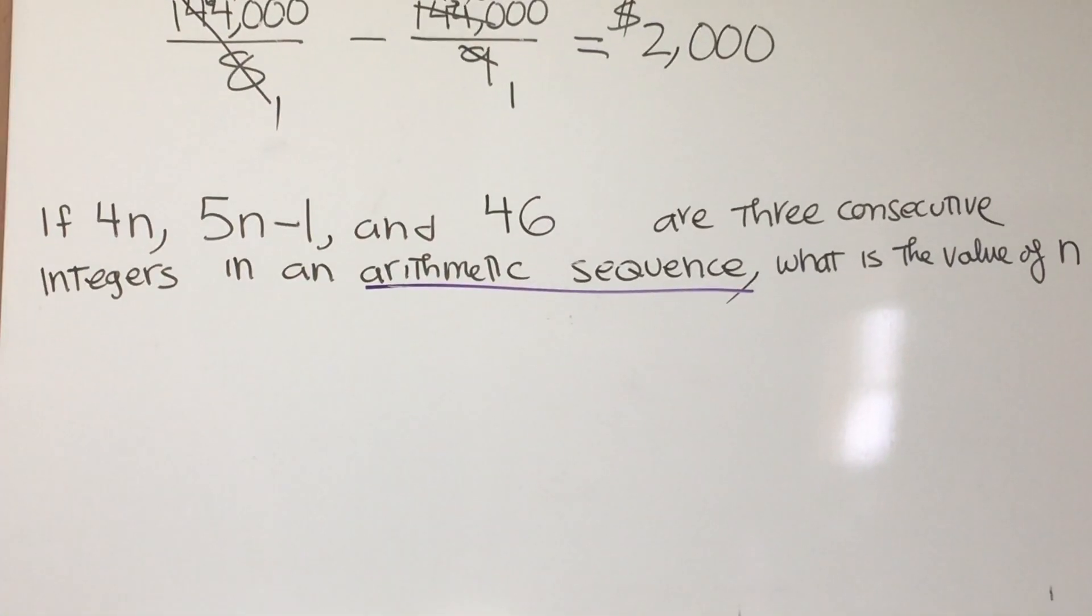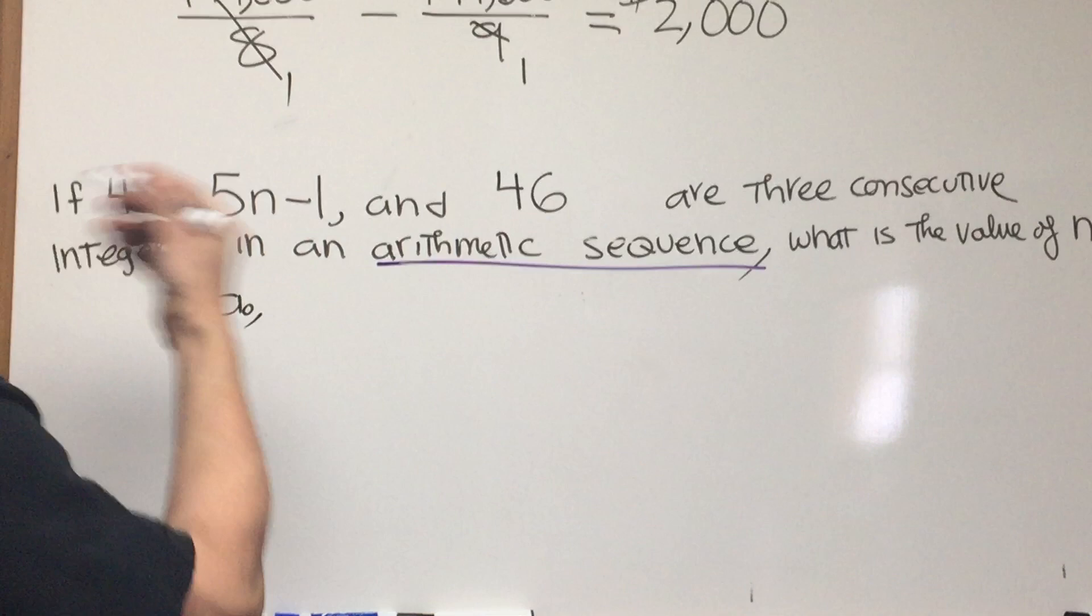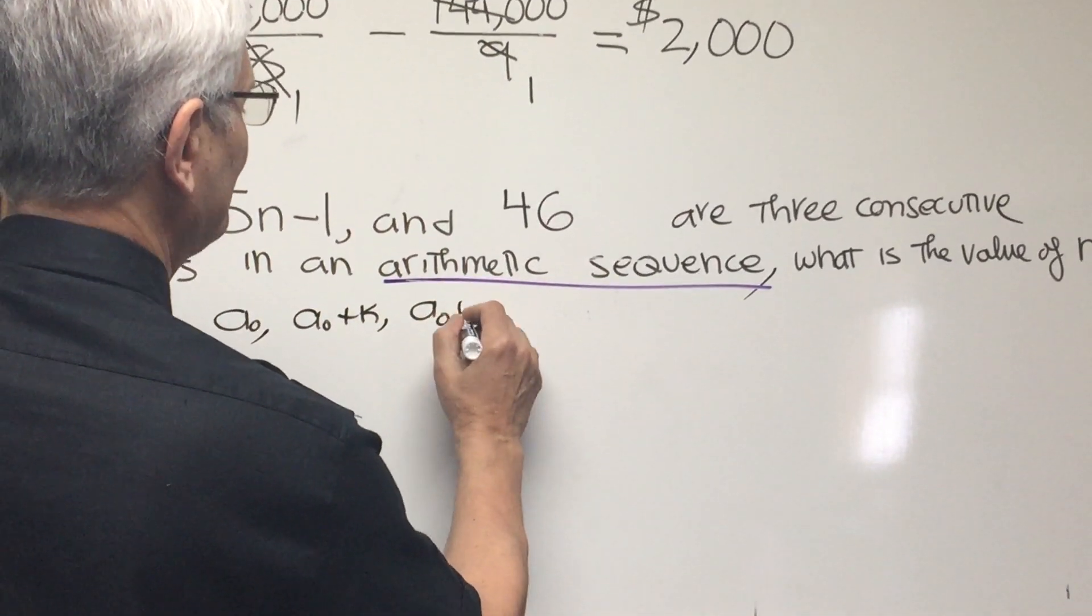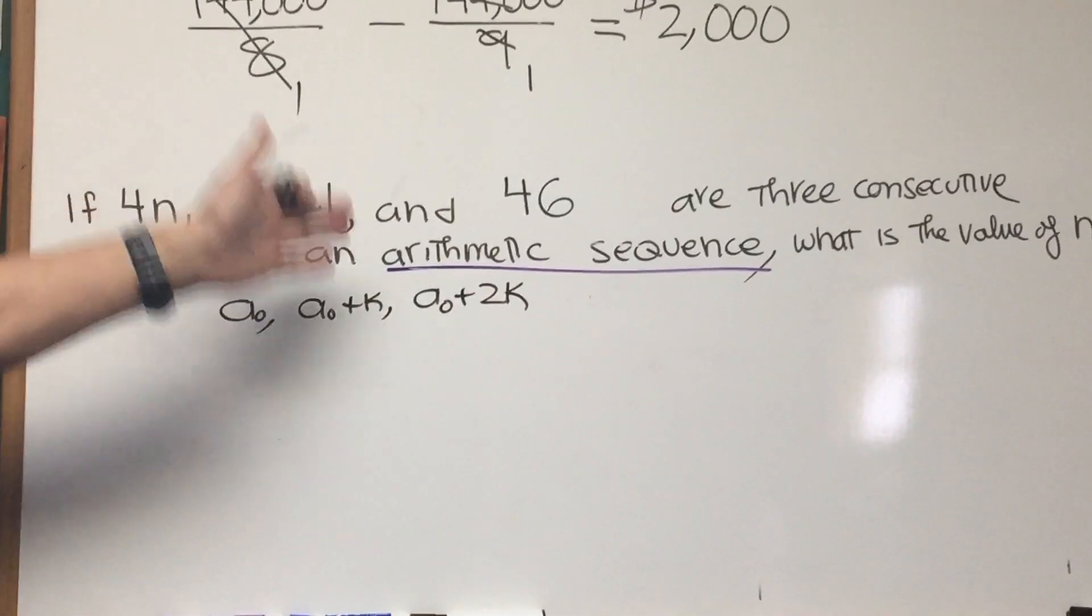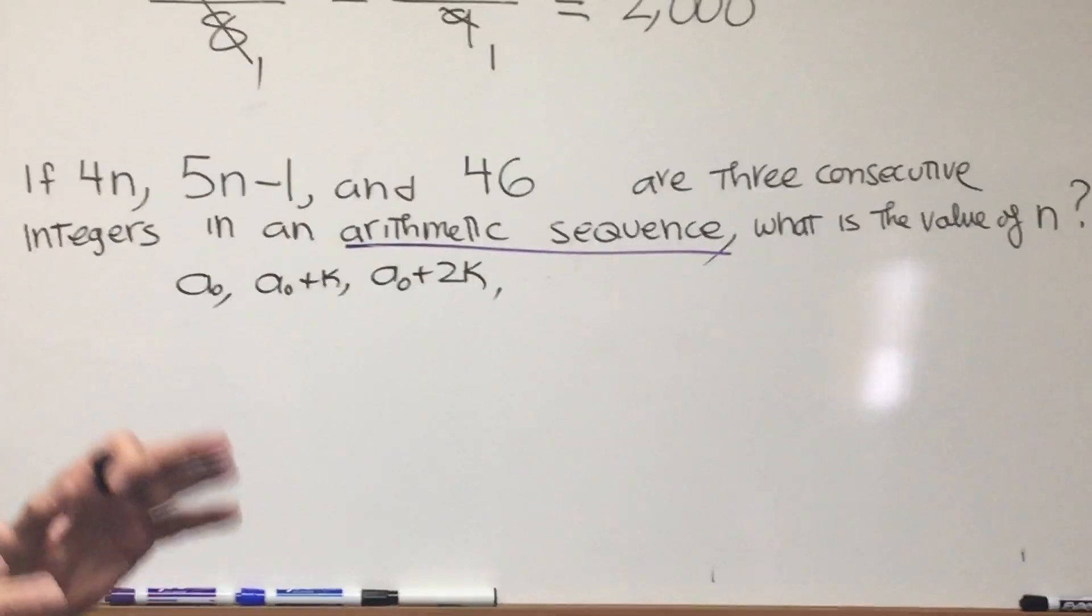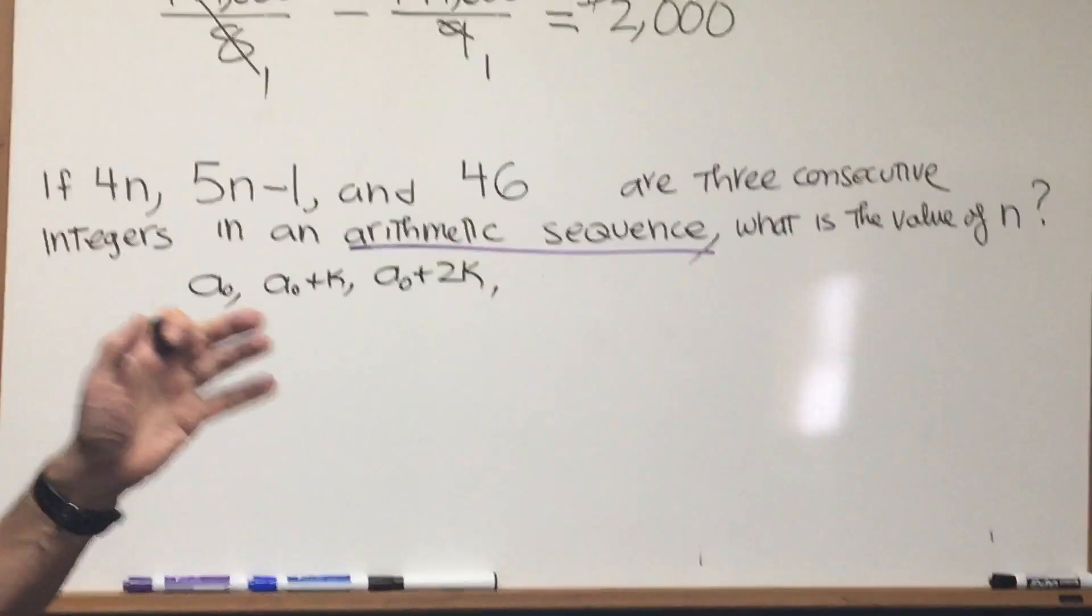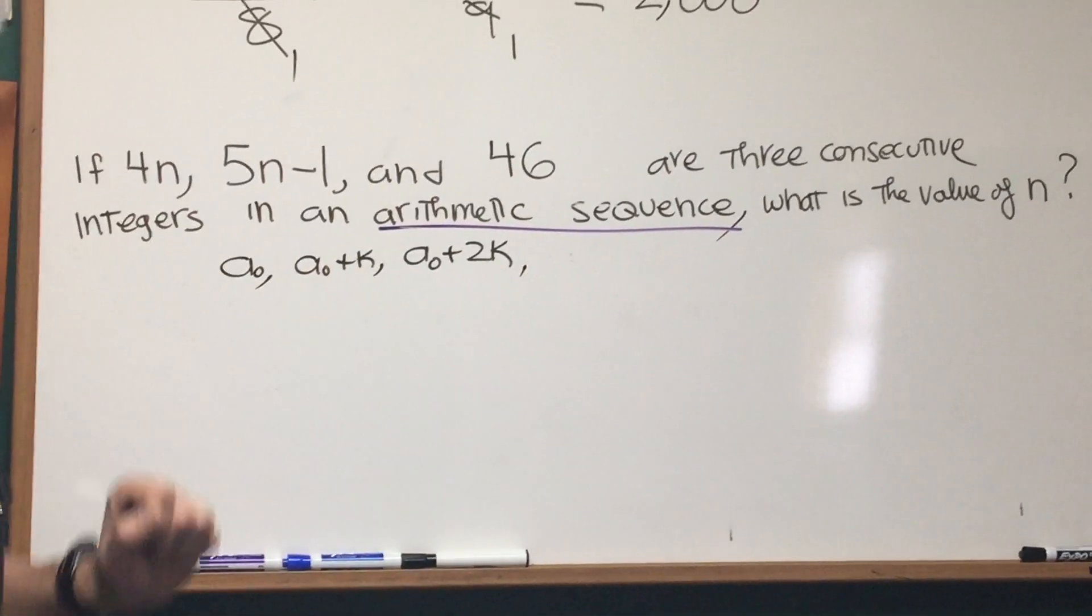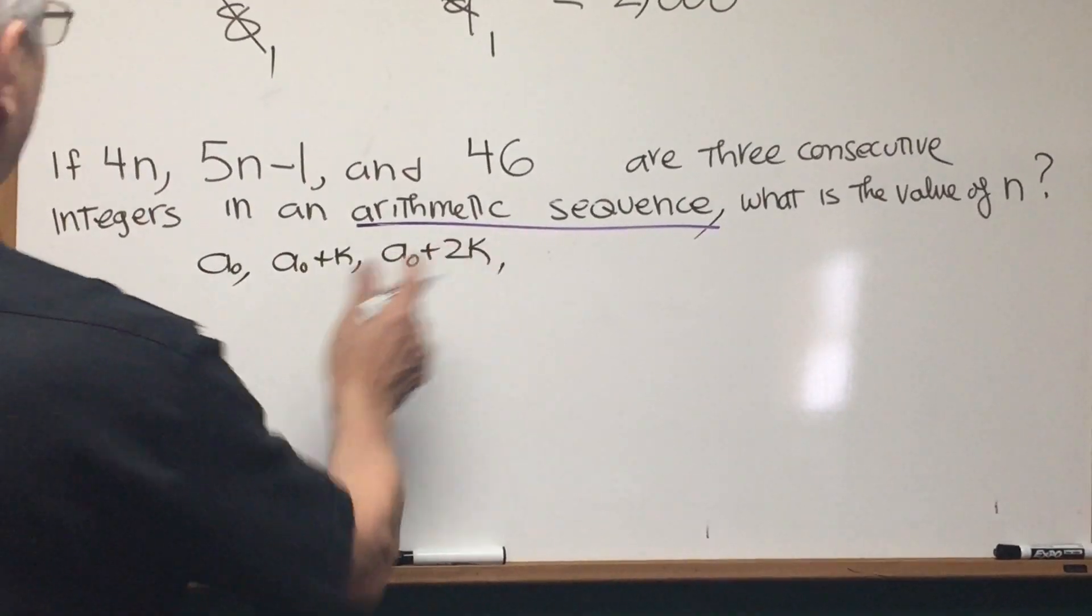And now an arithmetic sequence is a sequence in which we start with one number. The next number is arrived at by adding a constant, and the number after that is arrived at by adding the same constant. So you're adding k, then adding 2k, then adding 3k, and so forth. So that means the difference between any two numbers in an arithmetic sequence is going to be exactly the same. It's going to be that number k. So what we're really looking for is the number n.